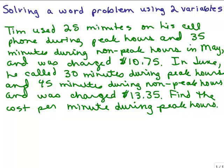We're going to solve a word problem using two variables. Tim used 25 minutes on his cell phone during peak hours and 35 minutes during non-peak hours in May and was charged $10.75.